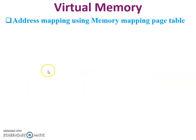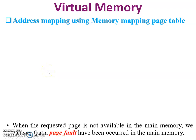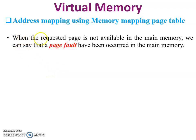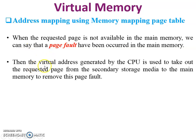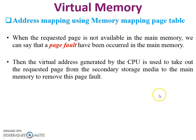For address mapping using a memory mapping page table: when the requested page is not available in main memory, a page fault has occurred. The virtual address generated by the CPU is used to fetch the requested page from secondary storage into main memory. Whenever a page fault occurs, data comes from secondary memory to main memory.